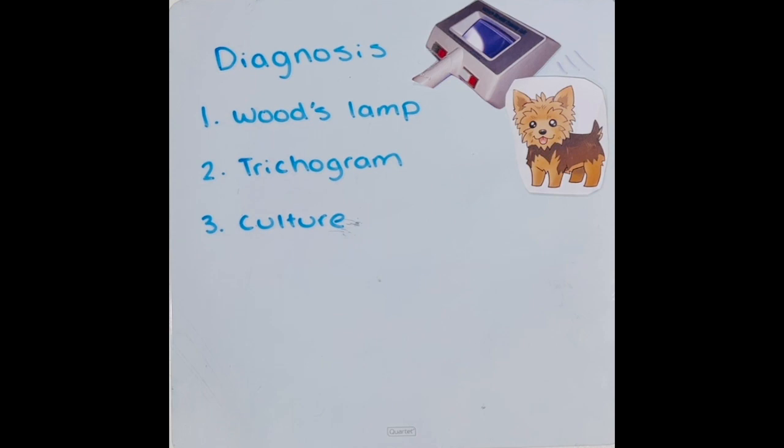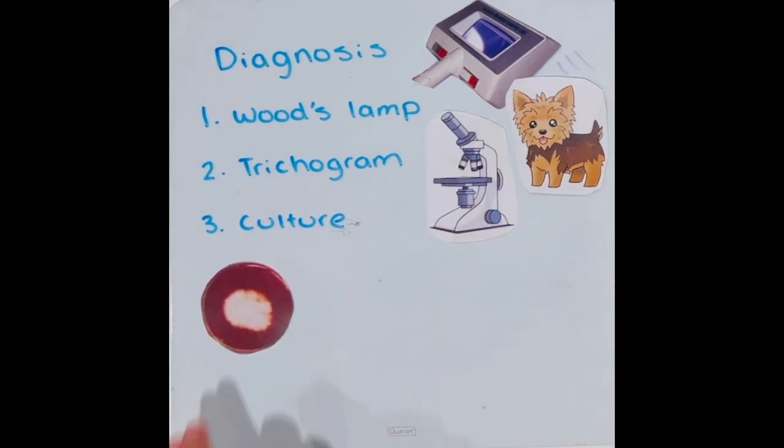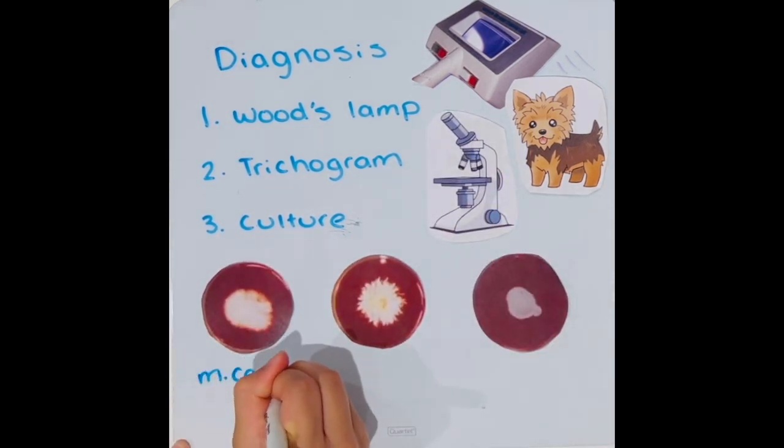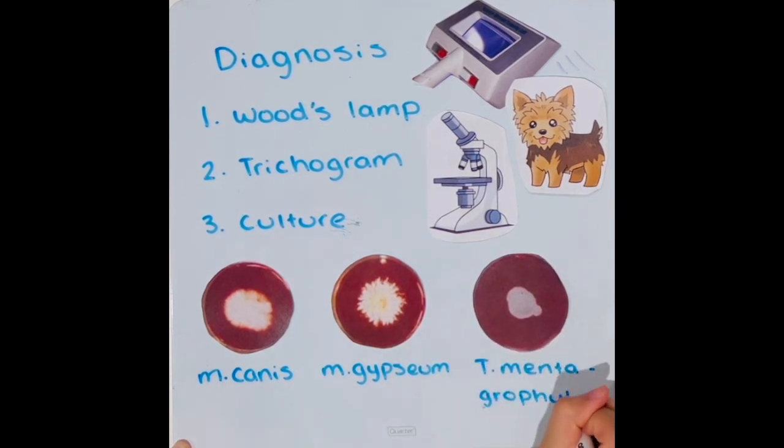The trichogram involves plucking hair from the base to microscopically examine for Arthrocynidia. The final method is culture, which is known as the gold standard.